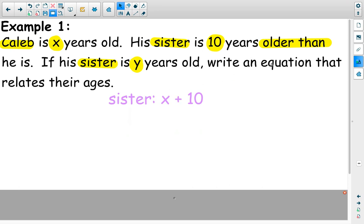But we want an equation. So now we're going to convert this to an equation. The next part of the word problem tells us that if his sister is y years old, that must mean that we are going to substitute sister with the variable y. That now gives us an equation that y equals x plus 10. His sister's age equals Caleb's age plus 10 more.